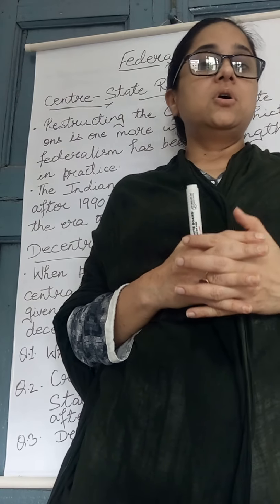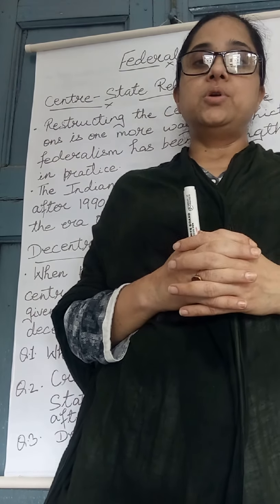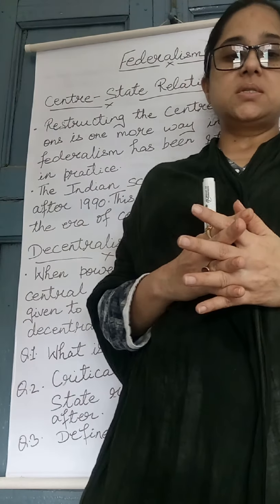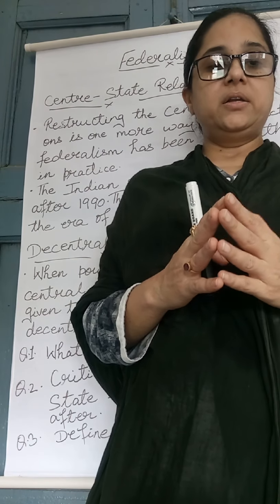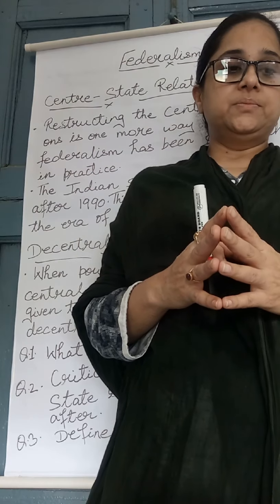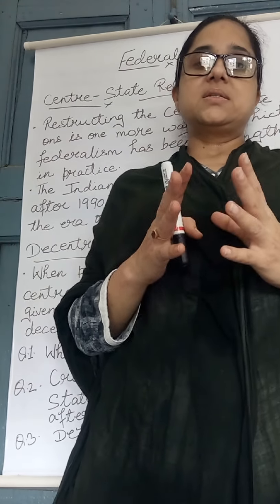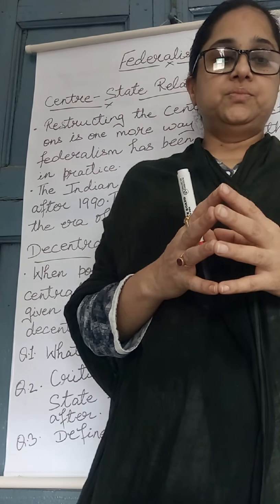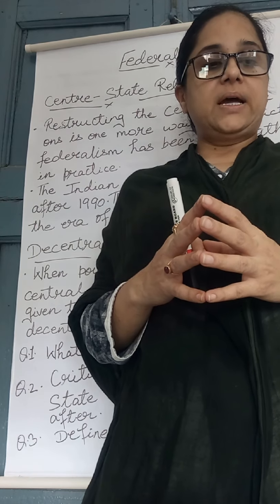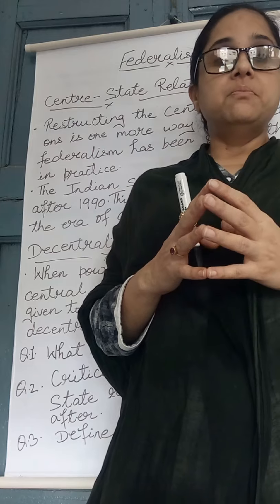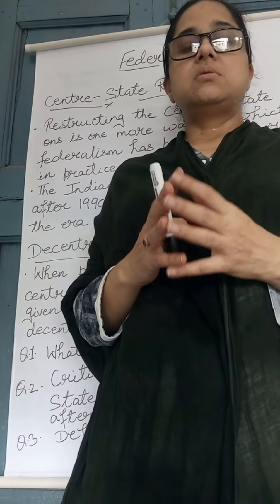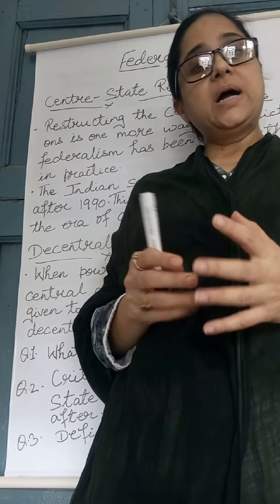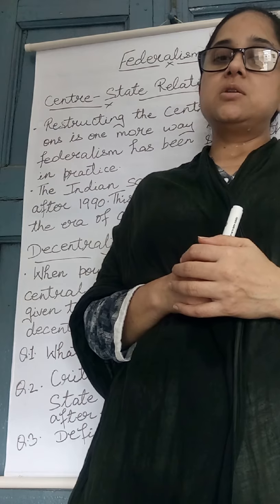I will take the example of Congress. At that time Congress ruled at the center as well as in the states. As the same party, Congress ruled both at the center and in most of the states. Whenever there were different parties at the center and in the states, the former tried to undermine the power of the latter. In those days it was observed that the central government would often misuse the constitution and dismiss state governments.